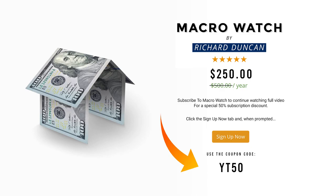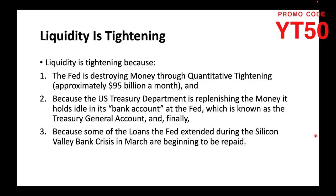Liquidity is tightening because the Fed is destroying money through quantitative tightening, approximately $95 billion a month, and because the U.S. Treasury Department is replenishing the money it holds idle in its bank account at the Fed, which is known as the Treasury General Account. And finally, because some of the loans the Fed extended during the Silicon Valley bank crisis in March are beginning to be repaid.